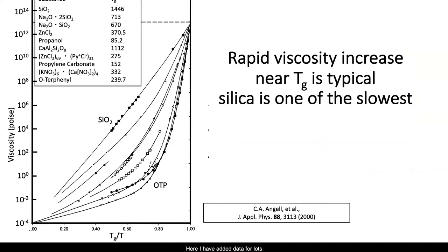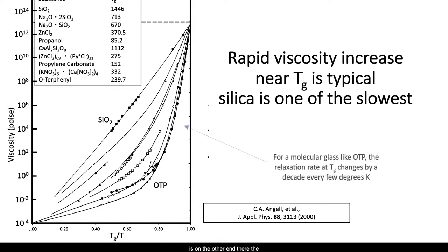All glasses solidify like that. Here I've added data for lots of other materials, all scaled so that the temperature of the transition, Tg, is at the right-hand side of the graph. You can see that the continuous but rapid viscosity increase at Tg is typical, and that silica — the straight line on the left — is one of the slowest. Ortho-terphenol, which is typical of the molecular solids studied in the Fakhraai group, is on the other end, where the viscosity changes by an order of magnitude every few degrees Kelvin.